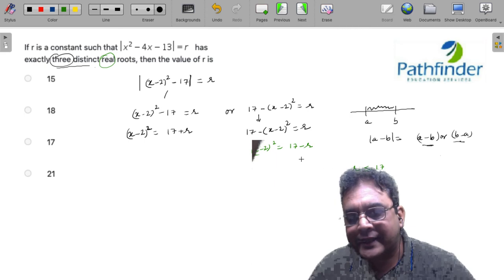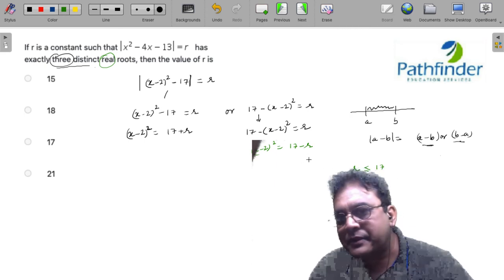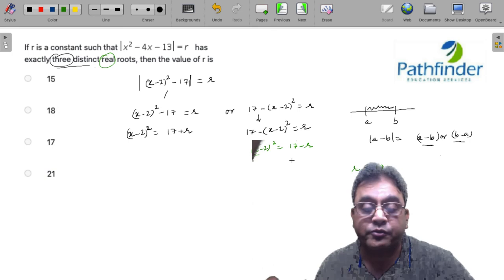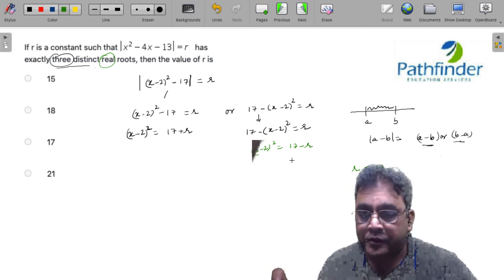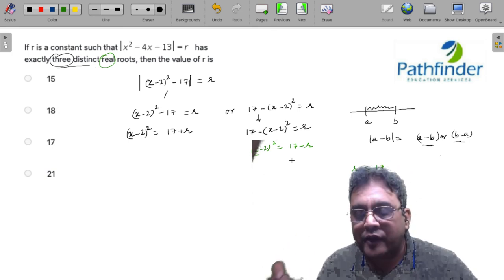I know that if r is less than 17, I will get some number which is positive and I will again get two roots, but I want only one root. So one root is possible if and only if it is the same root.